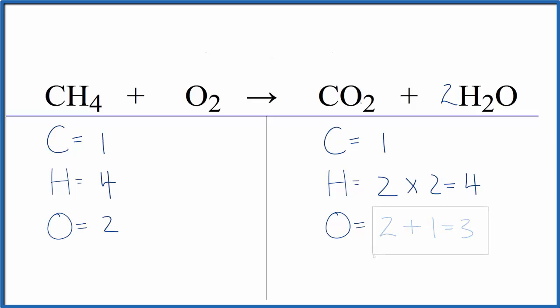Let's update the oxygens. We have our two here, plus the two times the one, two. That gives us four. All we really need to do is put a two in front of the O2 on the reactant side. Two times two, that gives us four. And we're done. We've balanced the equation for the combustion of methane.